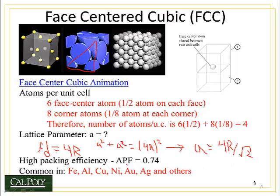Now if we calculate the atomic packing factor, we take the volume of the atoms — which is 4 atoms times four-thirds pi r cubed — divided by A cubed. In this case A cubed is (4r over the square root of 2) cubed. When we do that math, we find the atomic packing factor is 0.74. That's a lot higher than the atomic packing factor for simple cubic crystal structures.